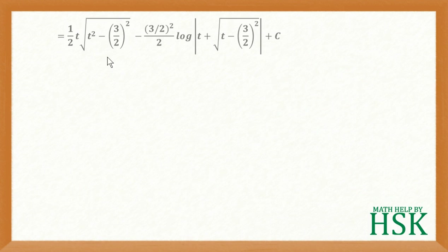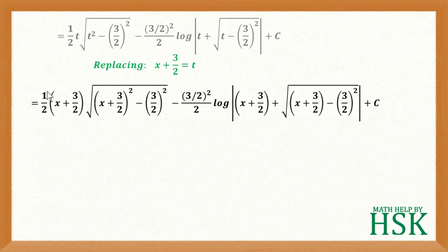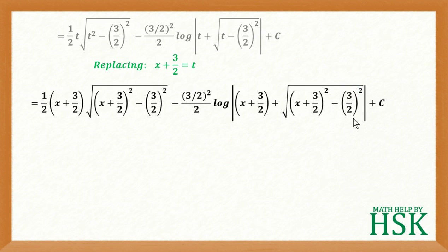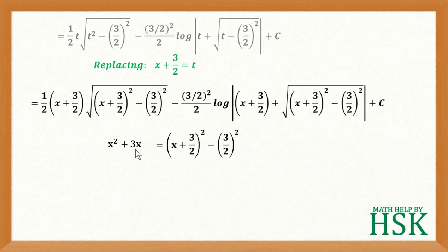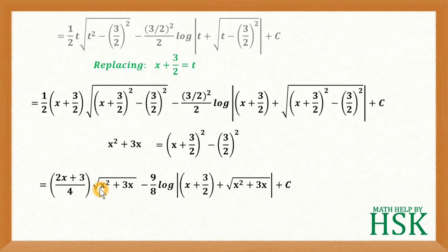Now I'm going to further simplify by placing x plus 3/2 back in place of t. So I get: 1/2 times (x plus 3/2) into square root of (x plus 3/2)² minus (3/2)², minus (9/4) upon 2 times log of (x plus 3/2) plus square root of (x plus 3/2)² minus (3/2)², plus c. Now x squared plus 3x equals (x plus 3/2)² minus (3/2)², so I replace those terms and the square root simplifies to square root of x squared plus 3x.